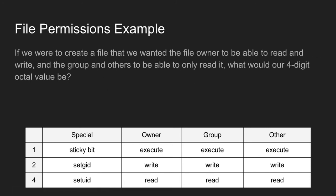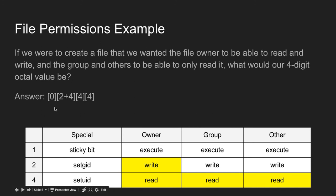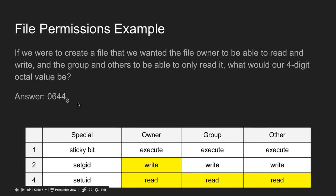So if we were to create a file where the file owner can read and write, and the group and others can only read it — what four-digit octal value would that be? For the owner to read and write we use two plus four, which is six. For group and others to only read we use four and four. So we get zero, six, four, four — the octal value 0644. The underscore eight just means it's base eight, so the number is 0644.